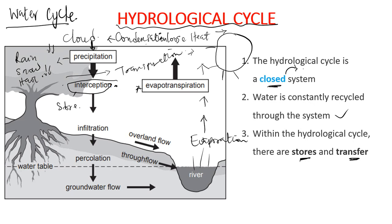Some water moves directly to the Earth's surface, and once there, some particles will infiltrate — that is, the movement of water from the surface into the soil. Water that flows on the Earth's surface during rainfall is referred to as overland flow, or surface flow. Water that moves through the soil is known as through flow or subsurface flow.